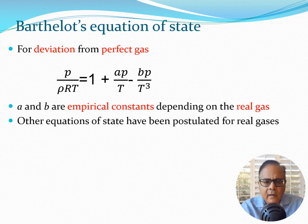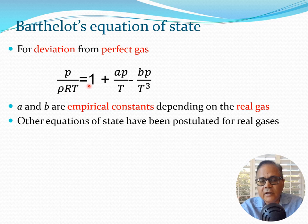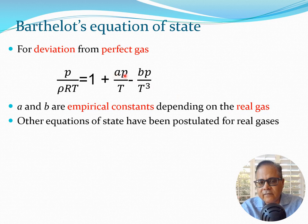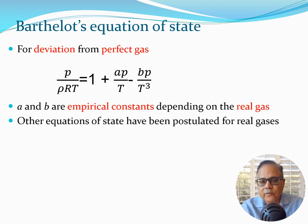Although we will use p = ρRT as our equation of state, it is not the only one. Many equations of state have been postulated for real gases. One of them is Barthelot's equation: p/(ρRT) = 1 + aP/T − bP/T³, where a and b are empirical constants for the specific real gas. If a and b are zero, it reduces to the perfect gas equation. For this course, however, we will use p = ρRT only.